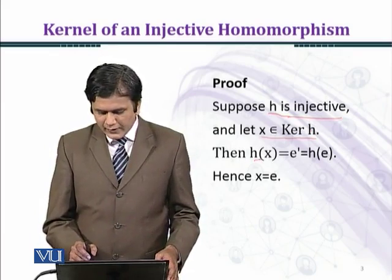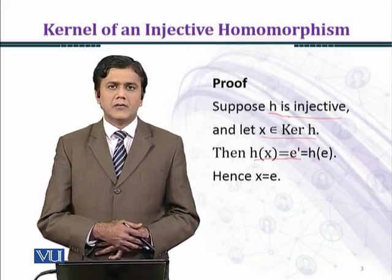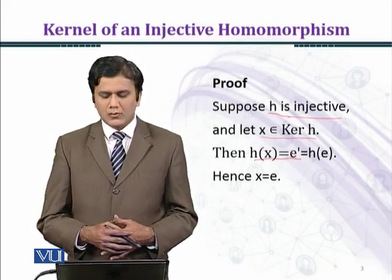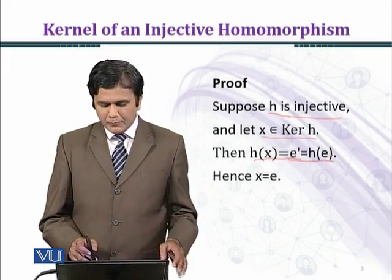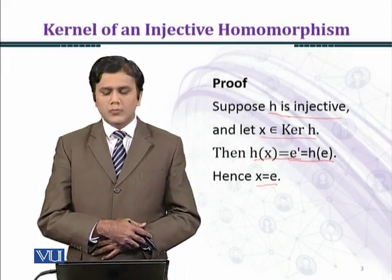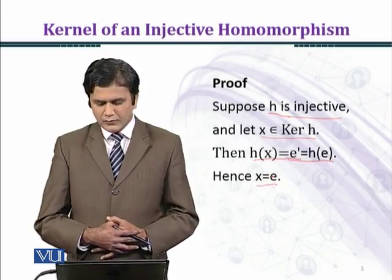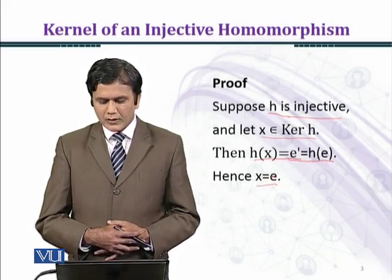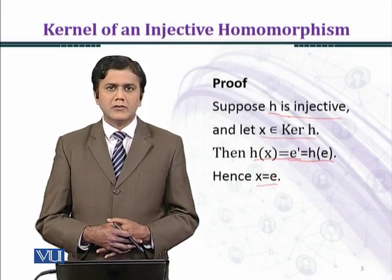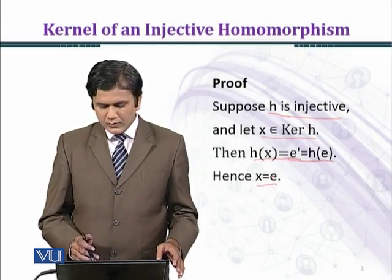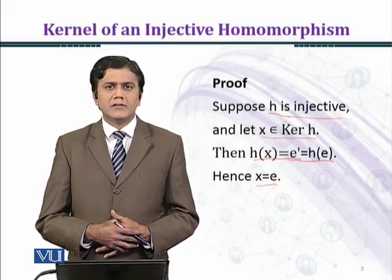Then H of x equals E prime. We know that under the homomorphism H, E maps to E prime, which equals H of E. This implies that x equals E. We assumed H is one-to-one and proved that any x in the kernel of H equals E. In this way, we have proved that the kernel of H contains only the singleton {E}.